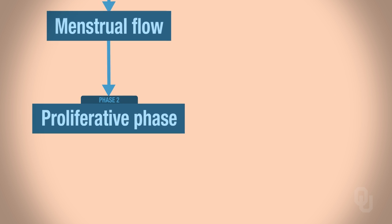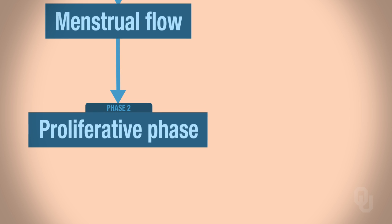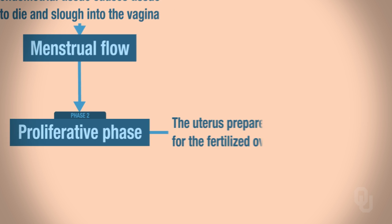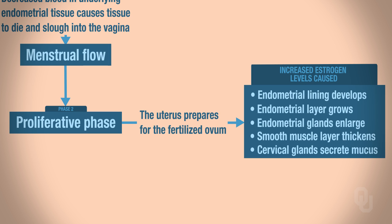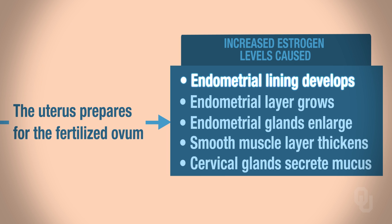At the end of menstruation, the second part of the uterine cycle occurs, which is called the proliferative phase. The uterus is preparing for the fertilized ovum in case fertilization occurs. To prepare, the endometrial lining has to develop: the layer grows, the glands get bigger, the smooth muscle gets thicker, and the cervical glands are secreting mucus. This development is caused by increased estrogen levels.